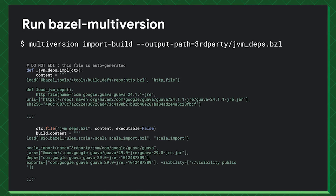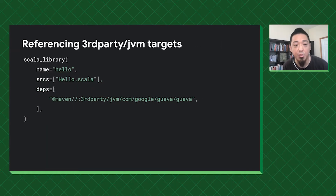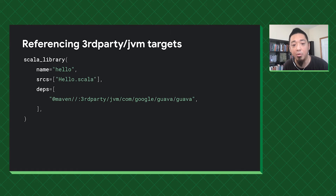When you run Multiversion with multiversion_import_build, it imports these build files and generates traditional rules — like Scala rules. First it creates the HTTP file including the URL and SHA-256 of the JAR files, and then it creates the Scala import representing the dependency graph of these external dependencies. To use these third-party dependencies, you refer to them as @maven//:{third_party_name}, for example Guava, and that will pick up all of Guava and its transitive dependencies for that target.